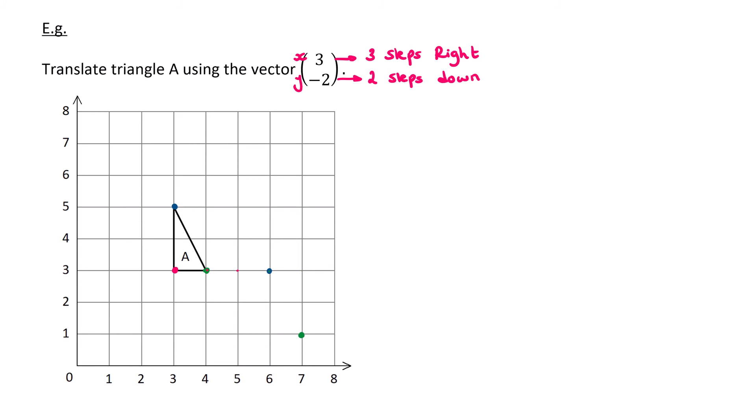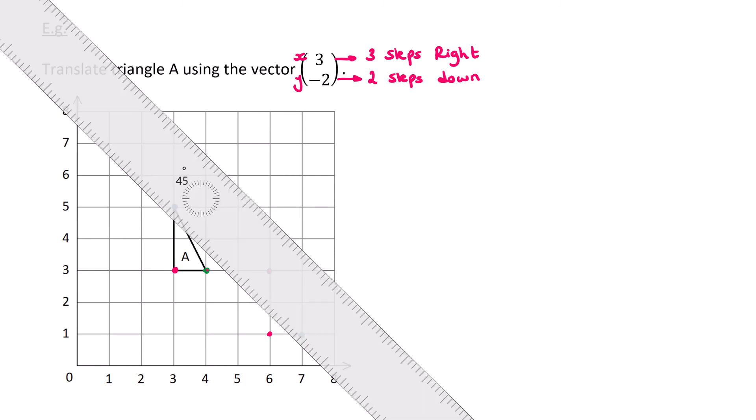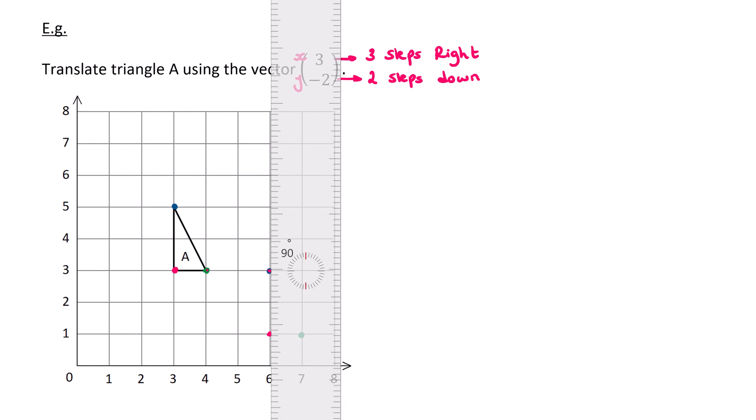And I'm going to do the same with my pink one. One, two, three steps to the right, and then one, two steps down. And now I've got my triangle and you need to use a ruler.